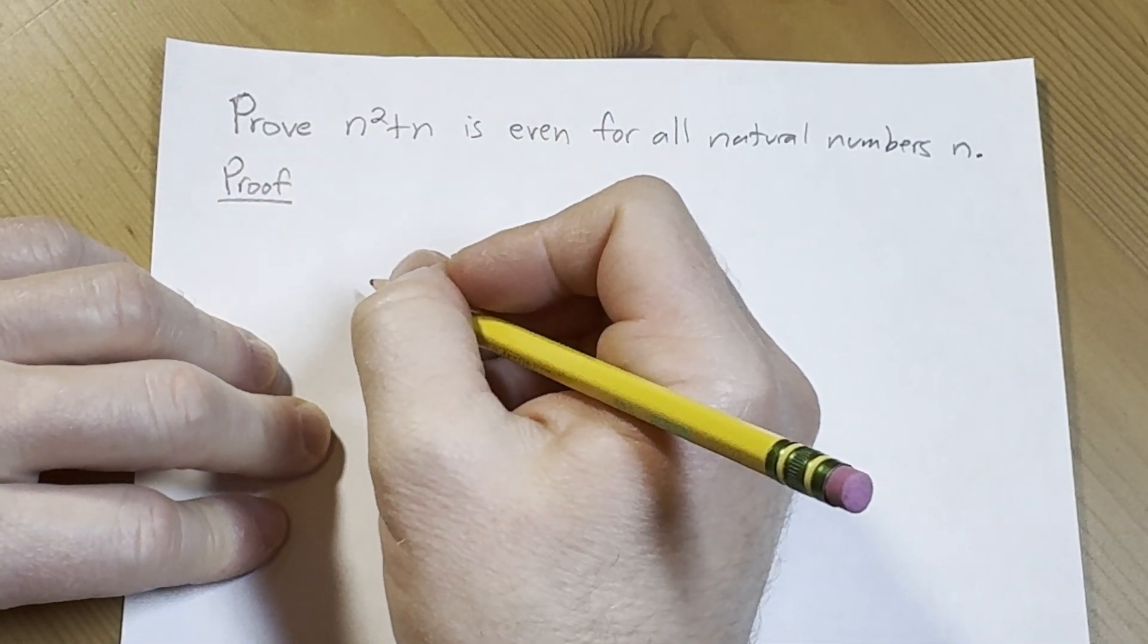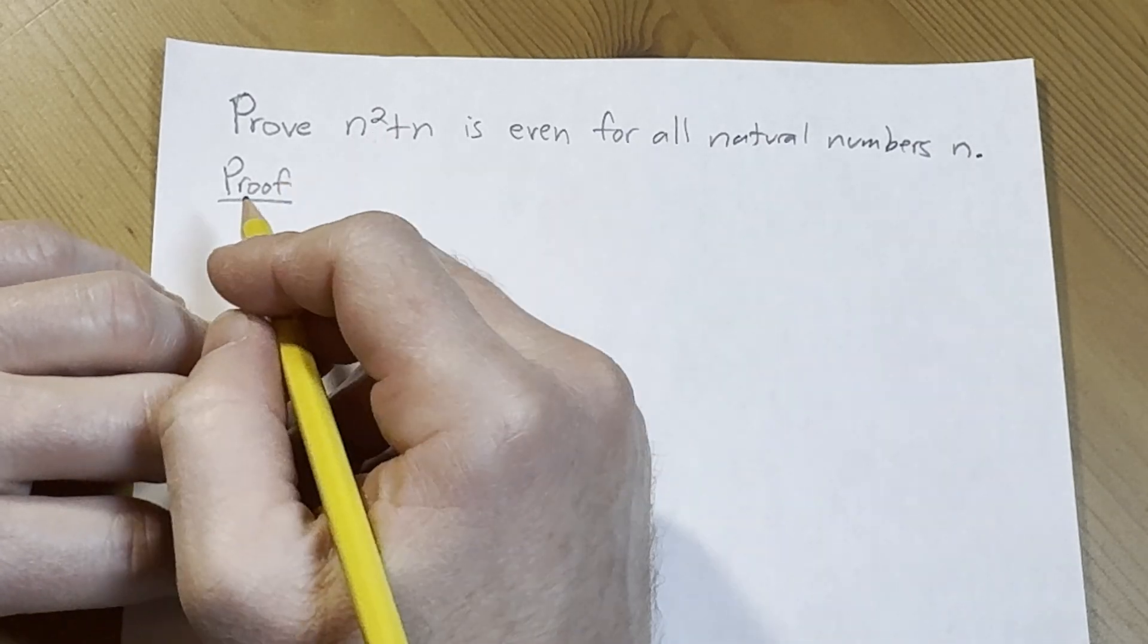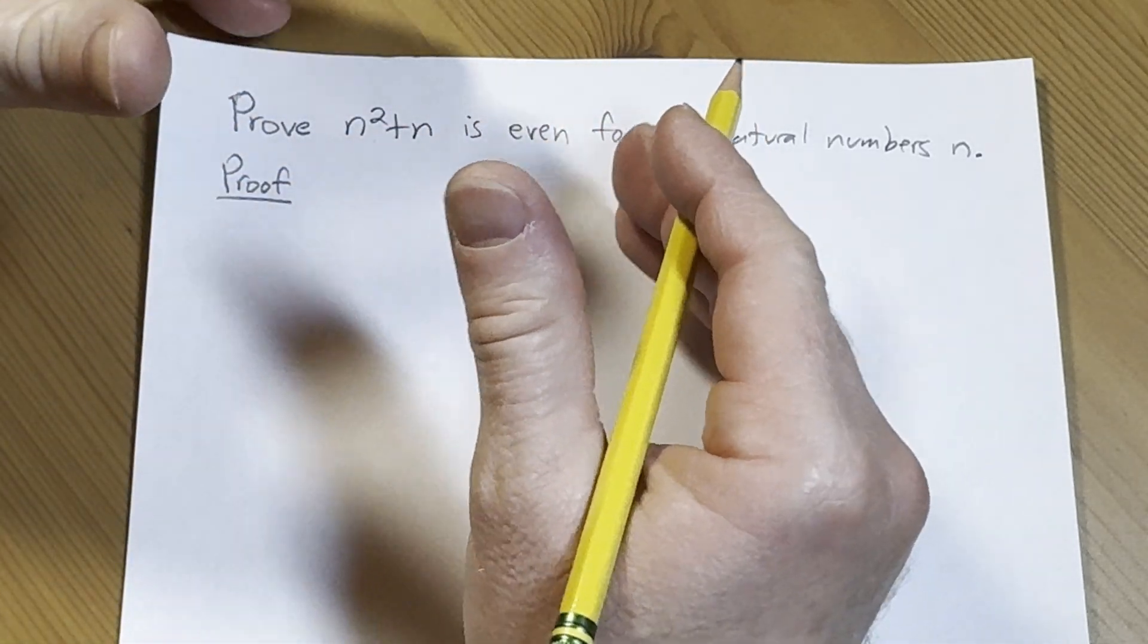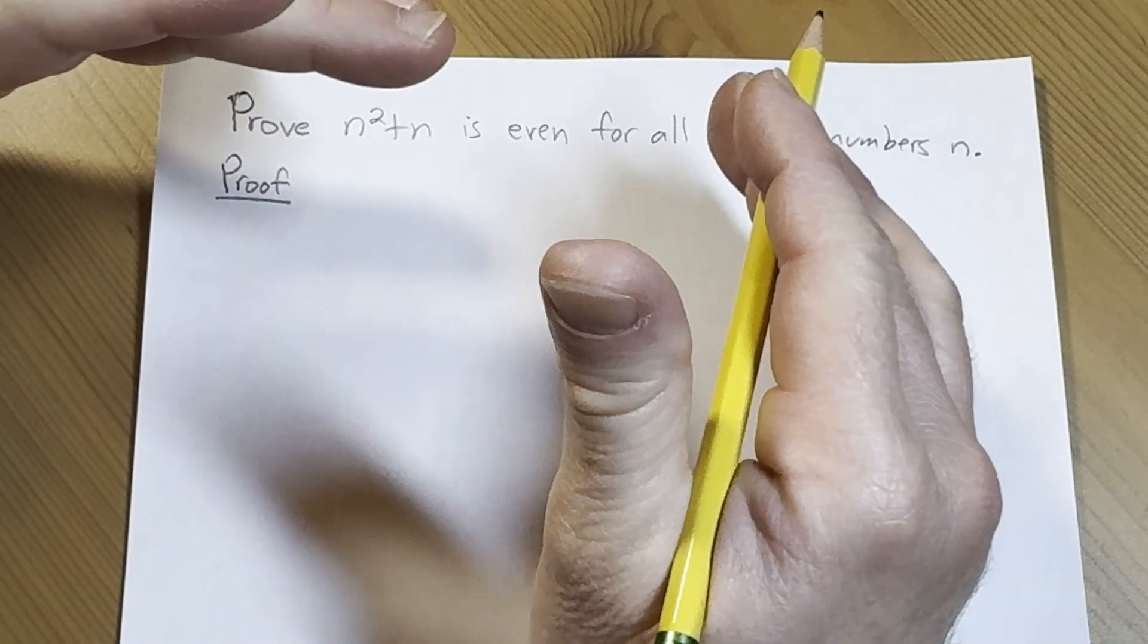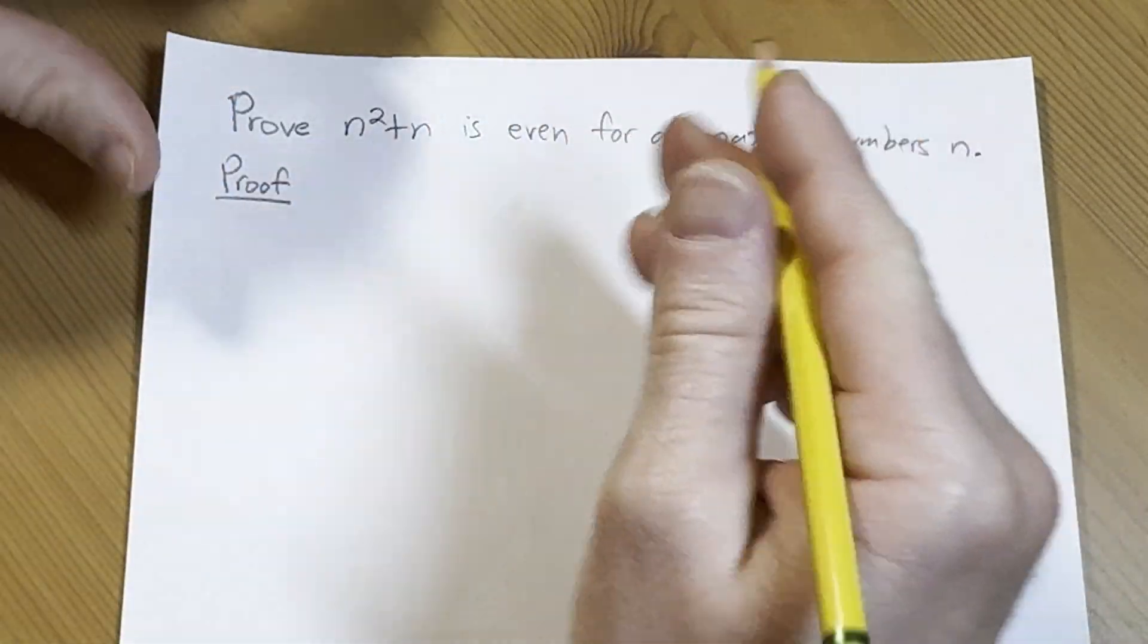Alright, so first thing to notice is that this is the product of two consecutive integers and whenever you have that, that means one is even and one is odd and that means the product is going to be even. So let's go ahead and write that down.